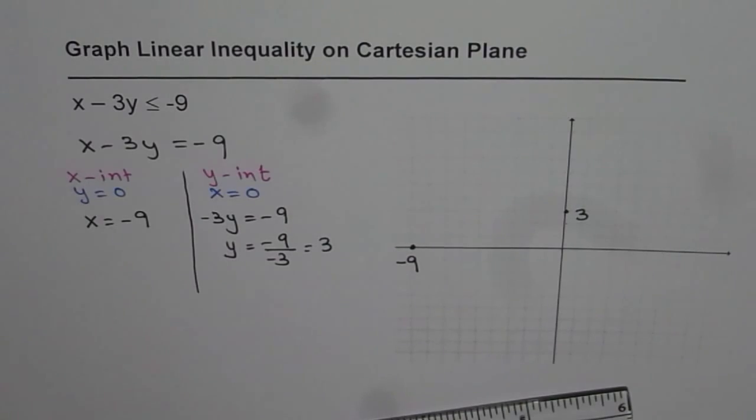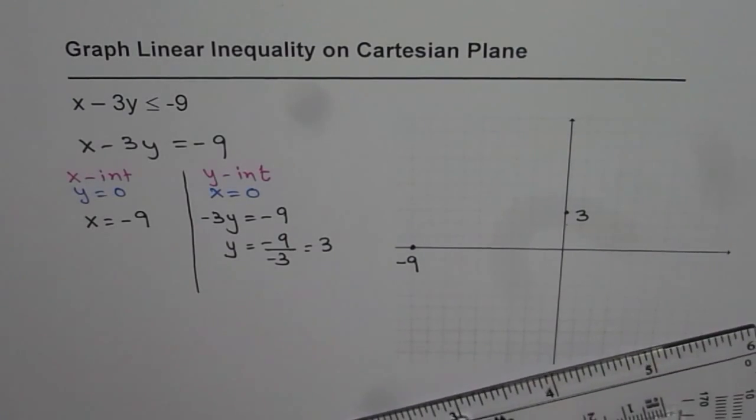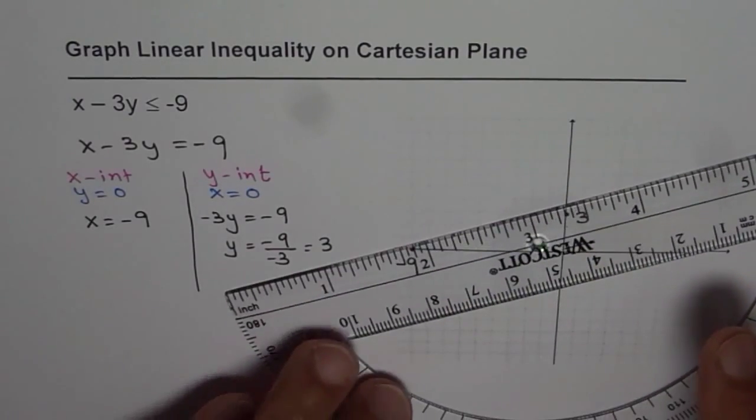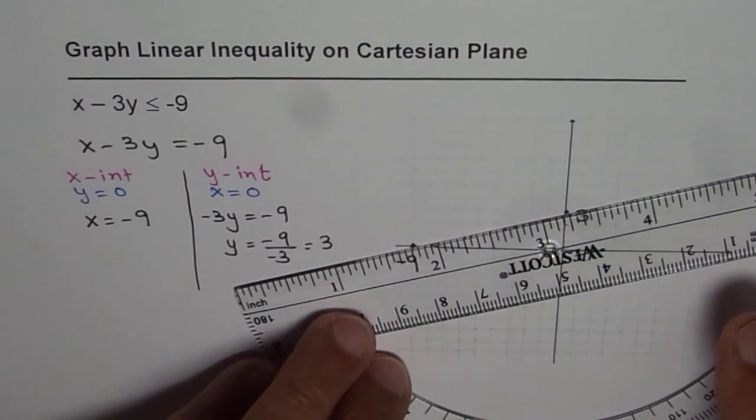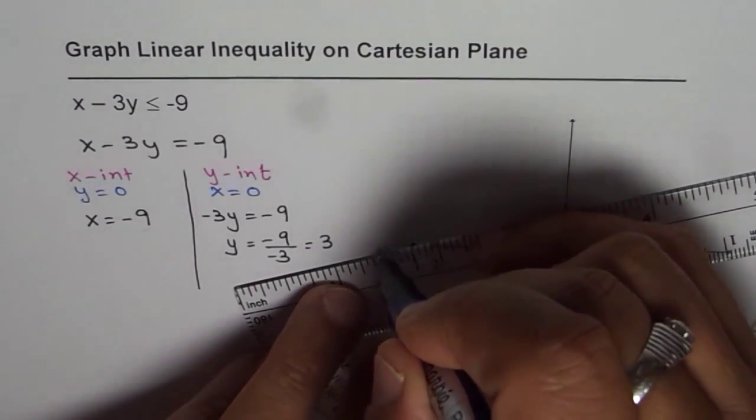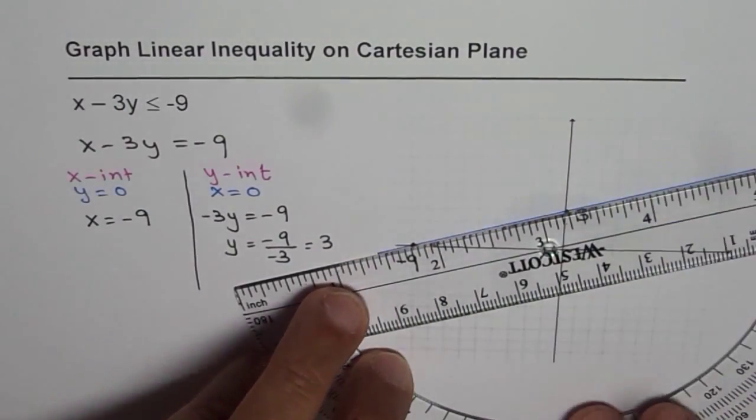Once you join these two points you get your line which is x - 3y = -9. Let's join them, there it goes, so that's the line.